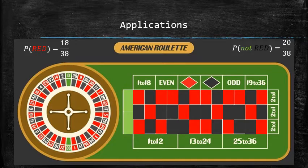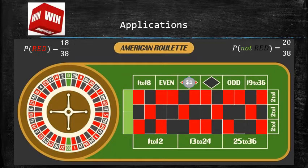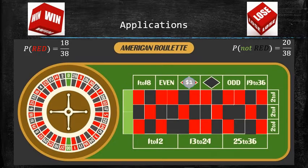The rules of the game are such that if you place a $1 bet on red, you will win a dollar if the result of the spin is red and lose a dollar if the result of the spin is not red.